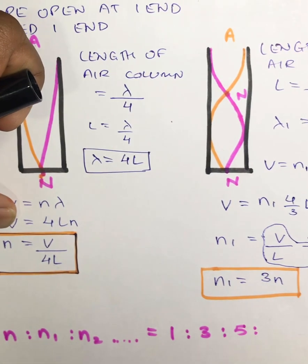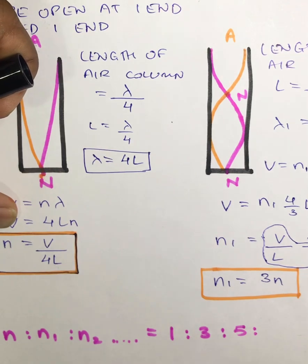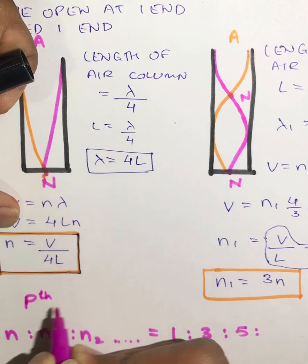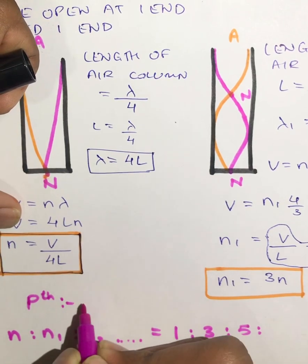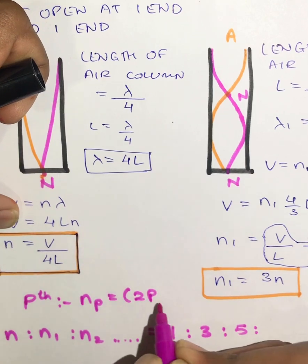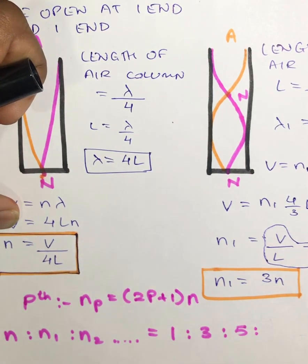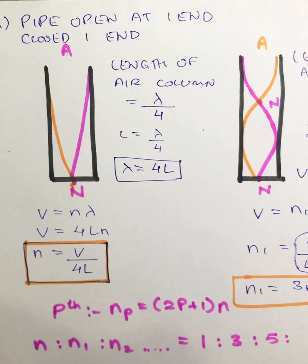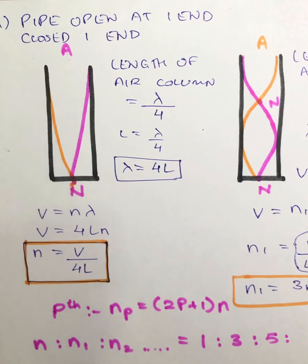Since only odd numbers appear in the ratio, only odd harmonics are present as overtones in the mode of vibration of an air column closed at one end. In general, for the pth overtone, the formula is: nₚ = (2p + 1) × n. Thanks for watching — please like and subscribe. In the next video we will cover a pipe open at both ends. The channel has all videos for Class 11, 12 Science as well as Engineering.